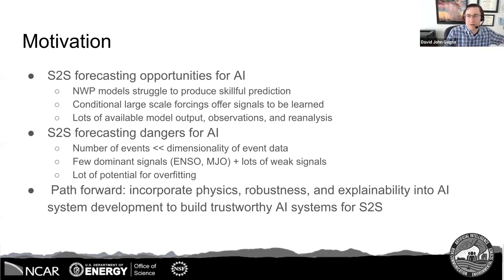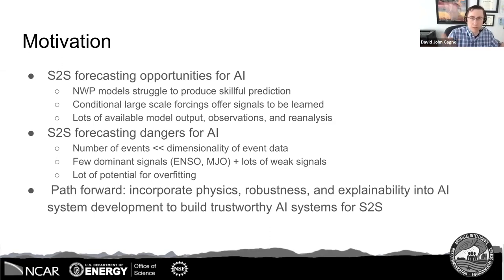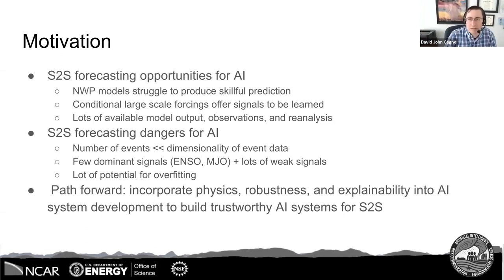Especially if you're predicting things on an annual basis or things like ENSO phases, there are only a few events in the observed record, so it can be easy to fit a multitude of models, many of which may overfit to that signal. Also, a lot of the interesting signals beyond the dominant ones — like the MJO — and other teleconnections are fairly weak and don't have strong predictive power, especially compared with shorter to medium range weather forecasting. This means that as tempting as it is to apply giant deep learning models to S2S, there's a lot of potential for overfitting.